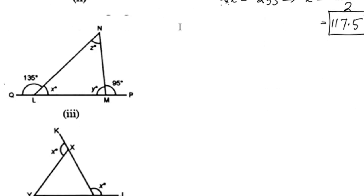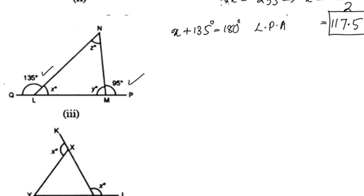Now we have x, y, and z. We change the exterior angles: 135 and 95. x plus 135 degrees equals 180 degrees by linear pair axiom. So x equals 180 minus 135, which is 45 degrees.